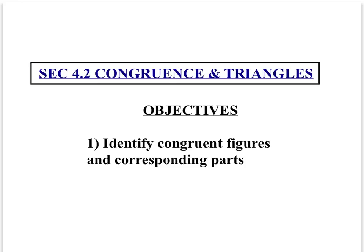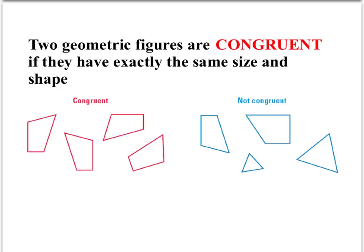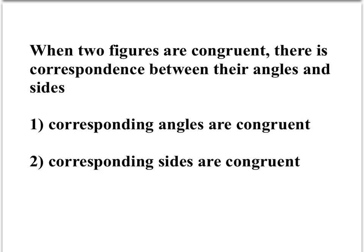Our objectives are to identify congruent figures and corresponding parts. When two geometric figures are congruent, they have exactly the same size and shape. We've talked about congruency before with angles and measures. If you notice the triangles here — one stands out on this side and one on the other — they're not congruent because they don't have the same size or shape.